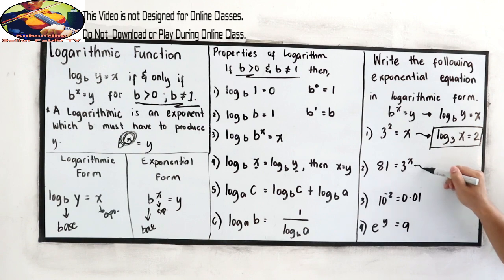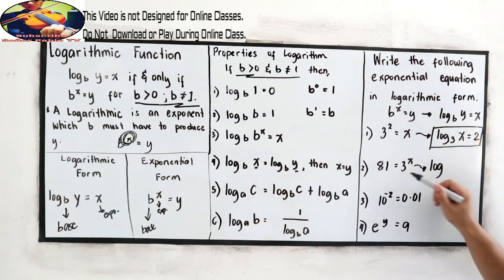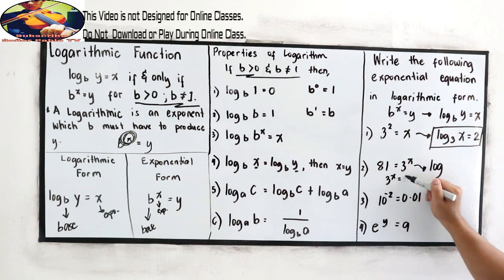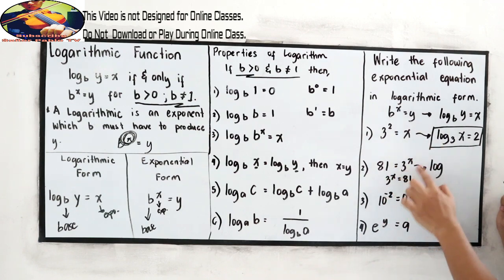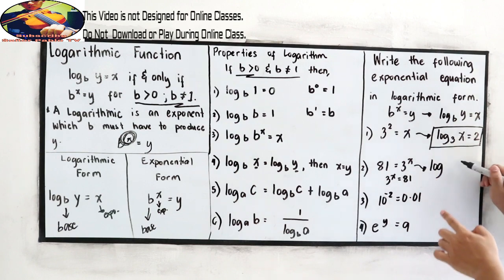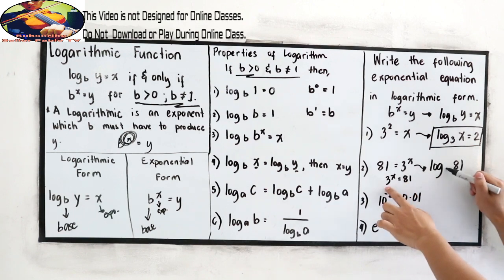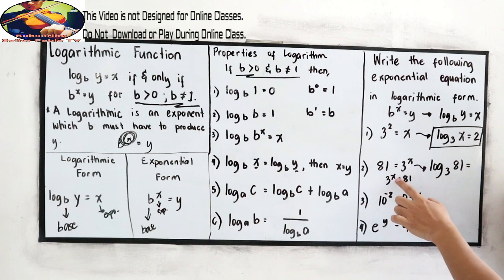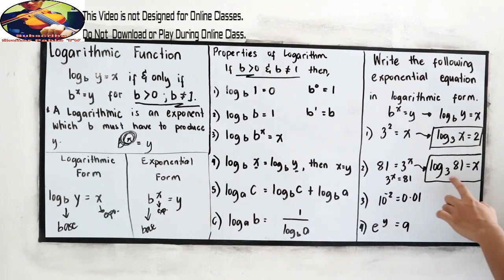Next example: 3 raised to x is equal to 81. Using our reference from number 1, this follows the same structure. Our y value is 81 and our base is 3, so log 81 base 3 is equal to x.